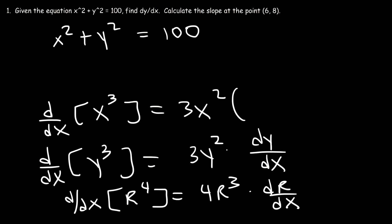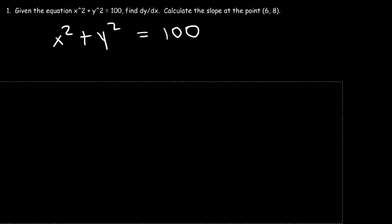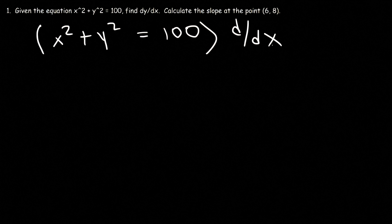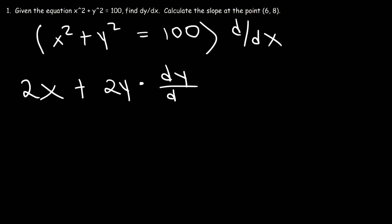Keep that in mind. When doing implicit differentiation, we're going to differentiate this function with respect to x. Every time you differentiate a y variable, you need to add the term dy/dx to it. So let's differentiate both sides with respect to x. The derivative of x squared is 2x, and the derivative of y squared with respect to x is 2y times dy/dx. The derivative of a constant is 0.